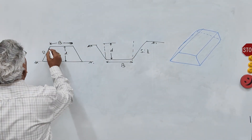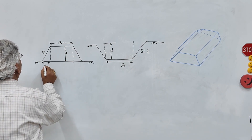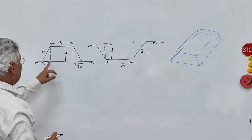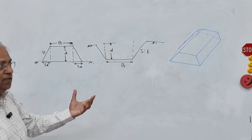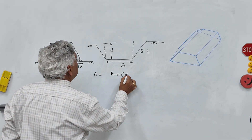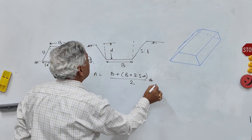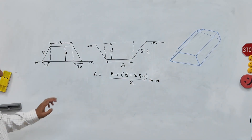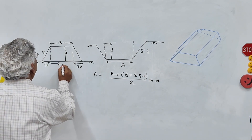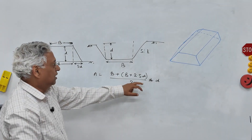The area of this trapezium can be found. This side is S into D, and this side is also S into D. So you have a rectangle and two triangles. The total area of this trapezium is (B plus B plus 2S into D) divided by 2, multiplied by the depth. That is B plus 2SD, which is the average of the top width and base, multiplied by the depth.